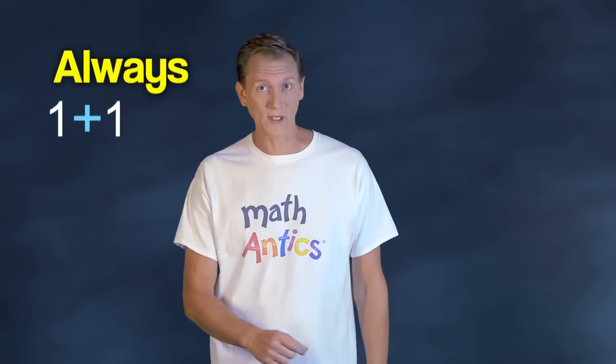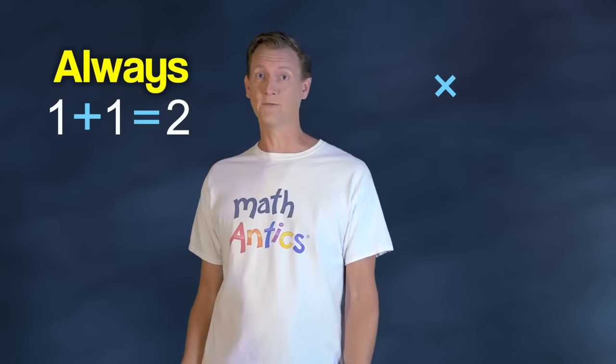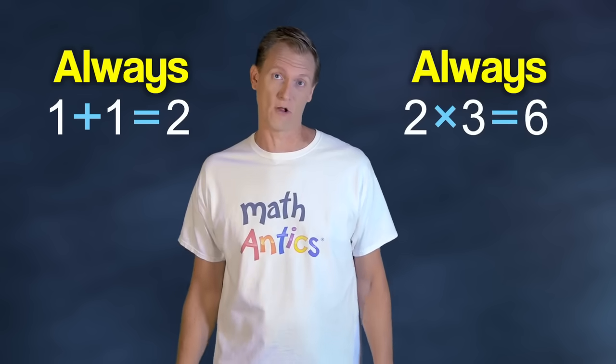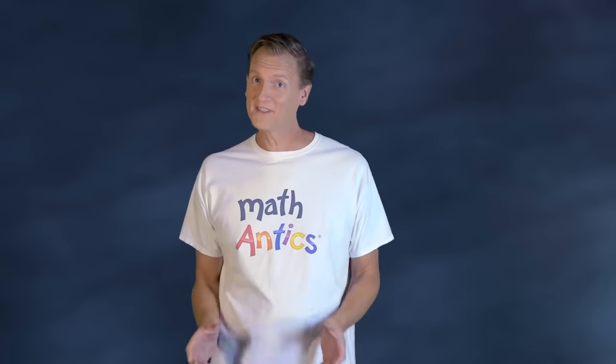Usually in math, we deal with things that always happen the same way. They're completely certain. Like, if you add 1 and 1, you're always going to get 2. If you multiply 2 and 3, you're always going to get 6. There's no uncertainty at all. But in the real world, things aren't always so predictable.